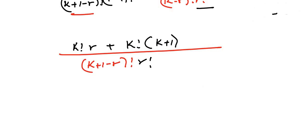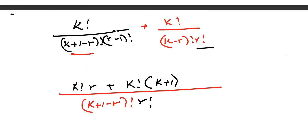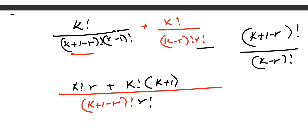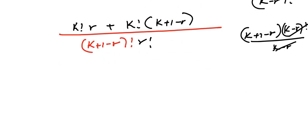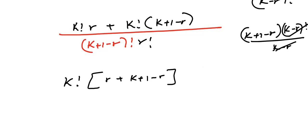Now we need to find what (k minus r) factorial goes into (k plus 1 minus r) factorial. Think of it as dividing: (k plus 1 minus r) factorial equals (k plus 1 minus r) times (k minus r) factorial, so (k minus r) factorial cancels and we get (k plus 1 minus r). Factorizing k factorial from the numerator, what remains is r plus (k plus 1 minus r), with denominator (k plus 1 minus r) factorial times r factorial.